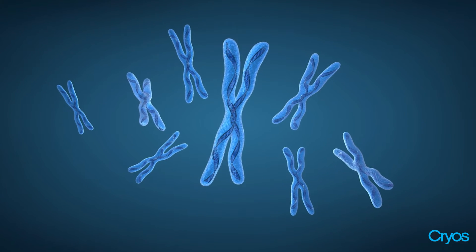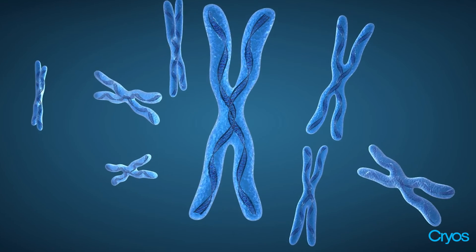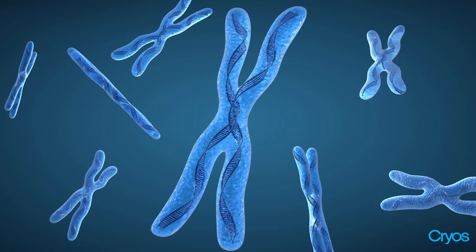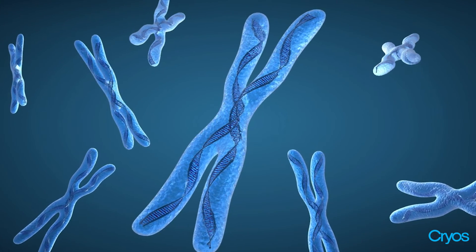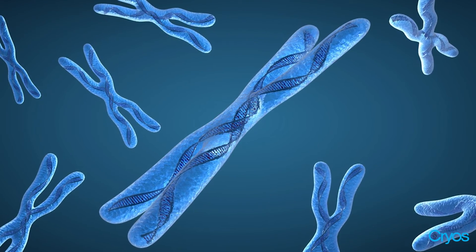Aneuploidy — the presence of an abnormal number of chromosomes — is a factor that can have negative effects on embryo development and pregnancy. Aneuploidy occurs normally in eggs, and the number of aneuploid eggs increases with age. It is normal, however, to find some degree of aneuploidy in any cohort of eggs regardless of the donor's age.